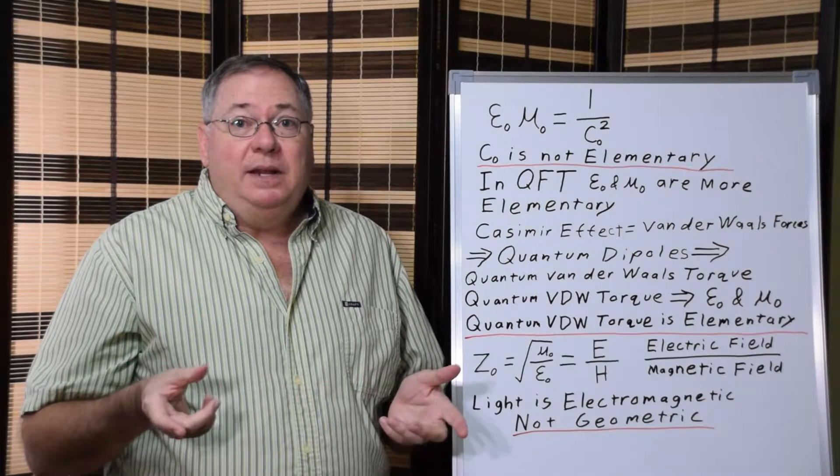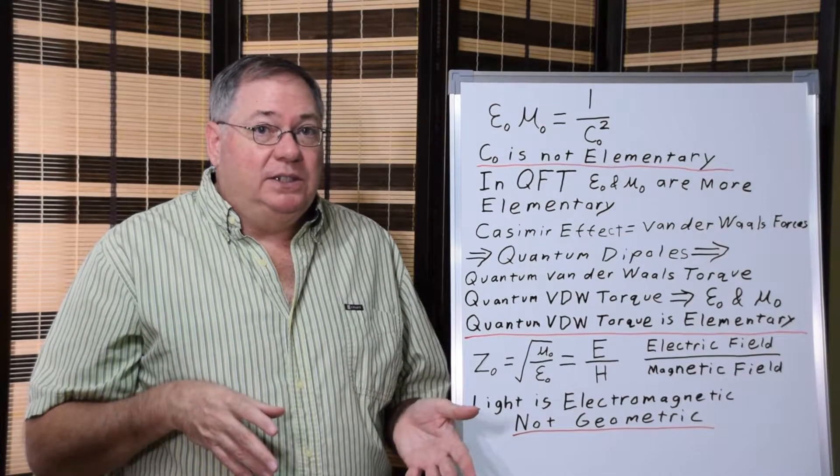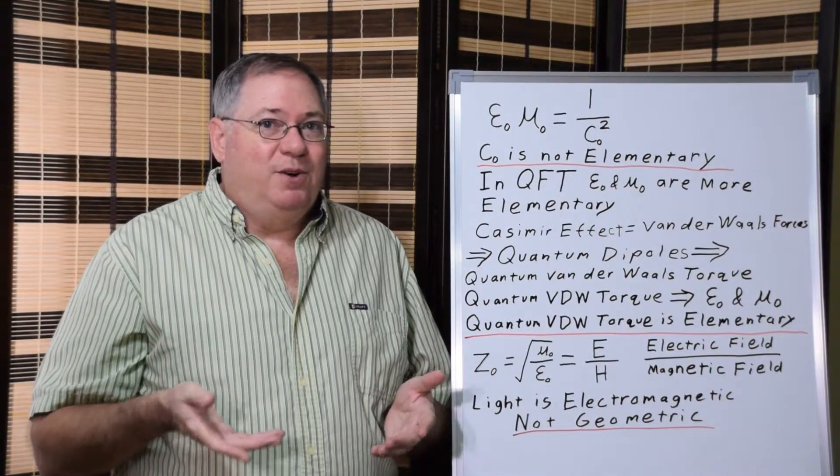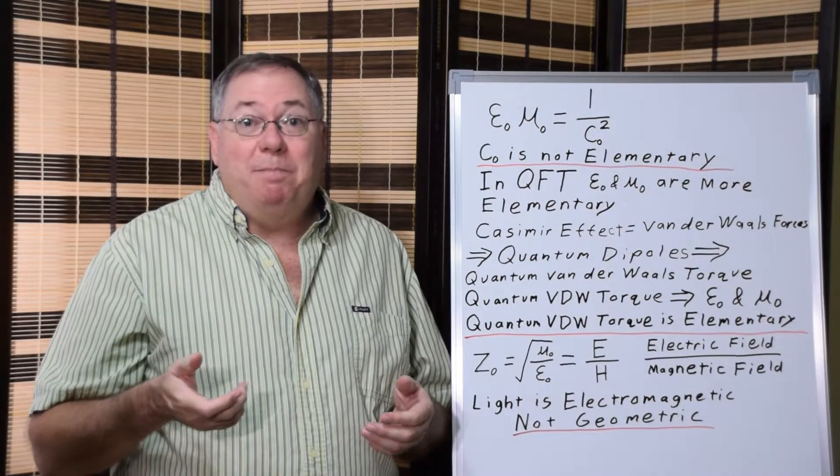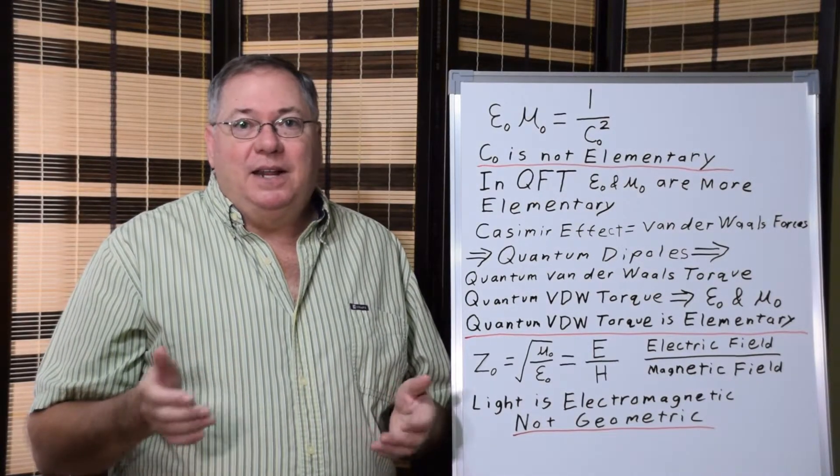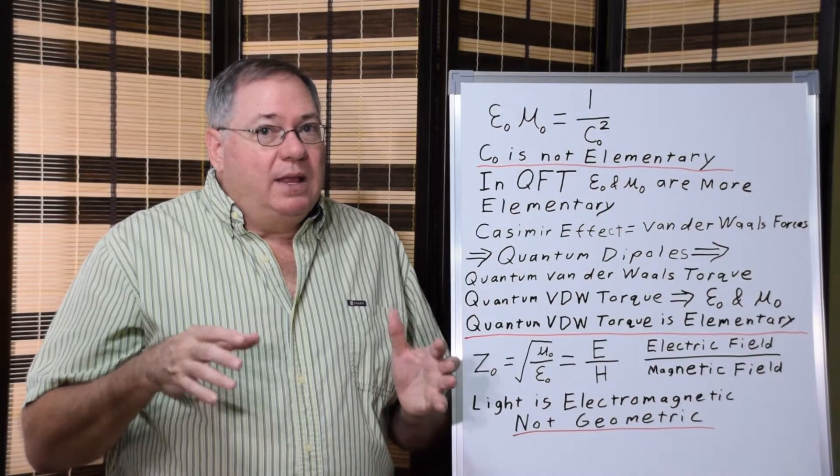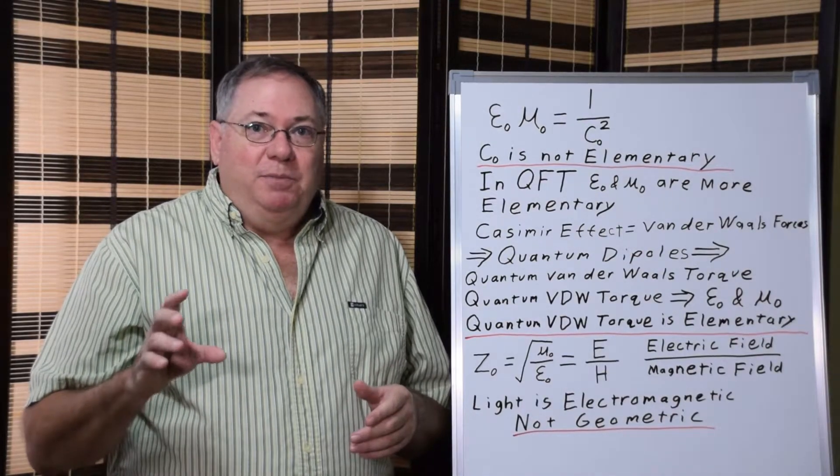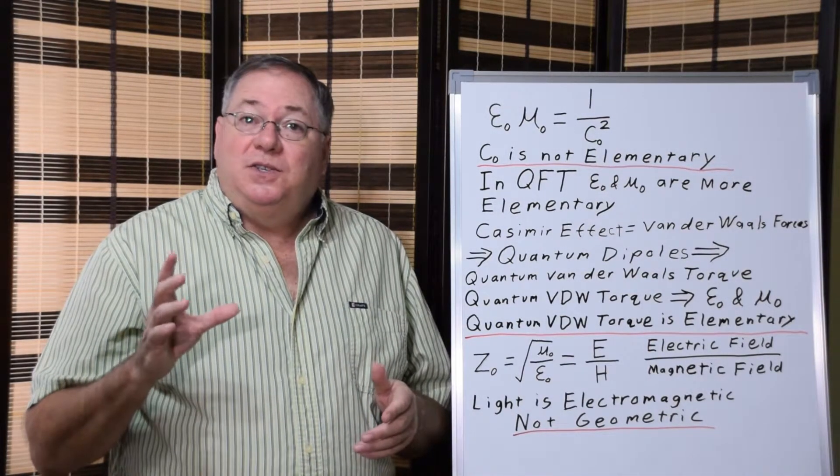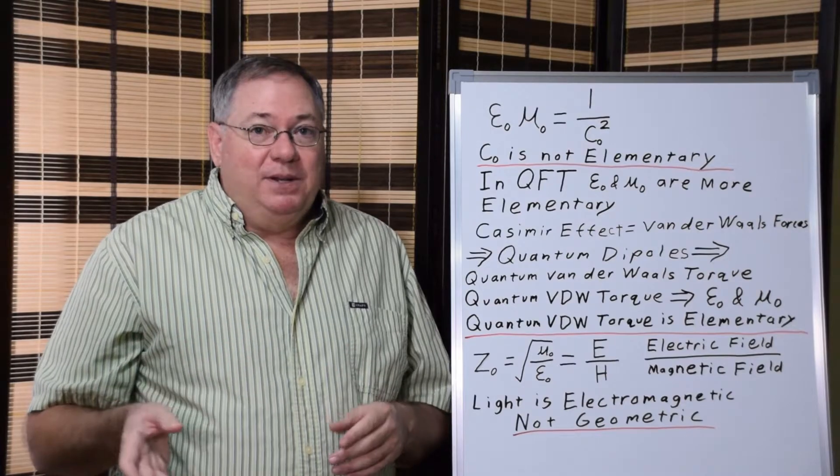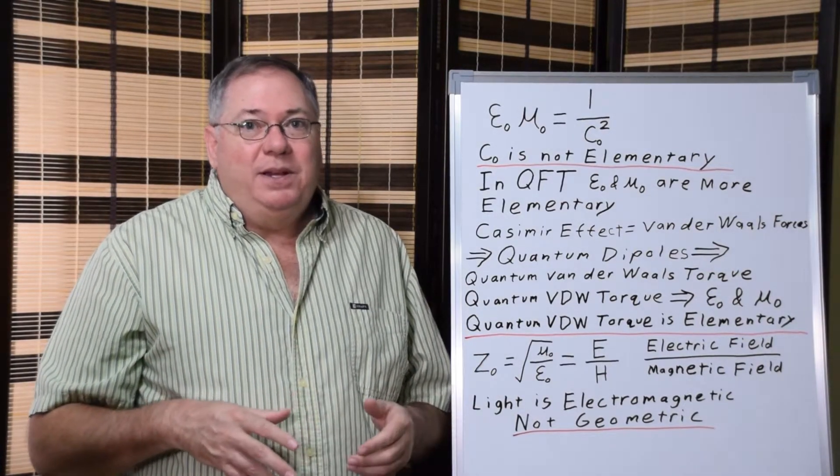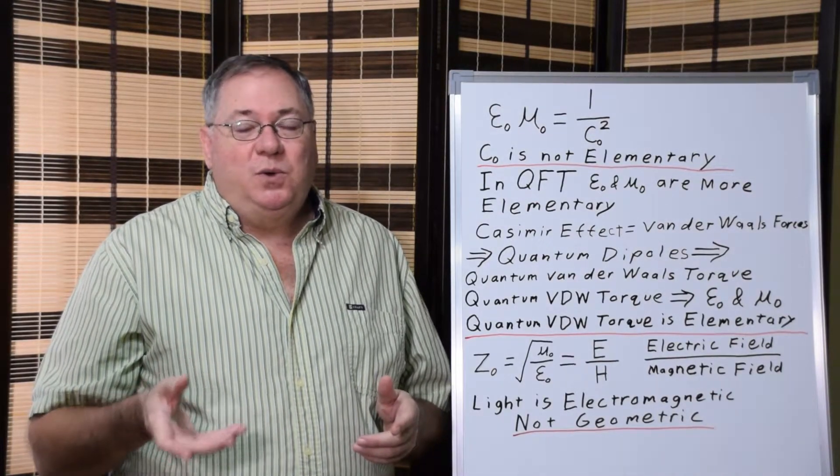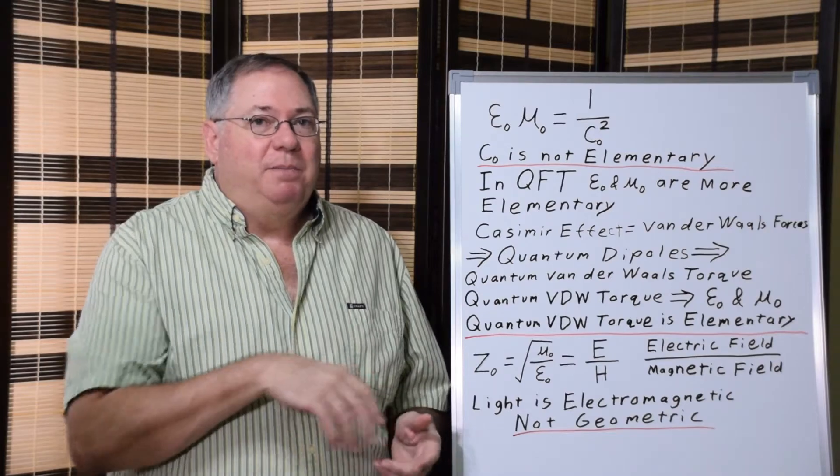If space were infinitely polarizable, then you would have an infinite capacity for charge. And permittivity is considered the capacitance of space. But it's limited by the Van der Waals torque. And that limit is what sets the permittivity constant. And permeability similarly is related to magnetic charges. And magnetic charges happen when rotating quantum dipoles produce quantum magnets based on the direction of rotation. So the quantum field is filled with these tiny little quantum magnets. And they also respond to magnetic fields. So the magnetizability of space related to the permeability constant is also regulated by the quantum Van der Waals torque as it relates to magnetism.